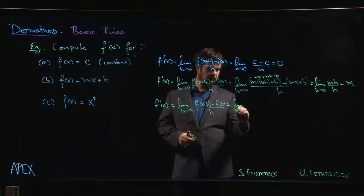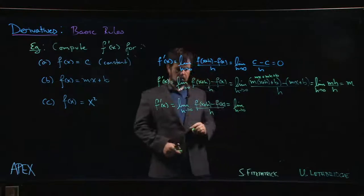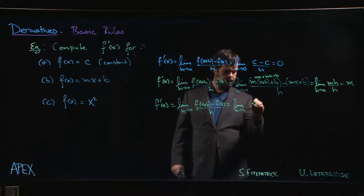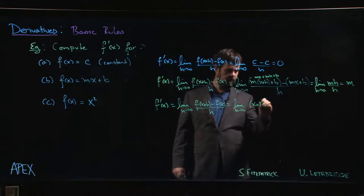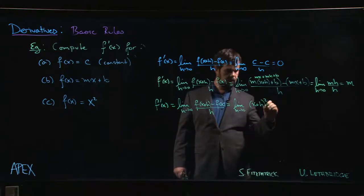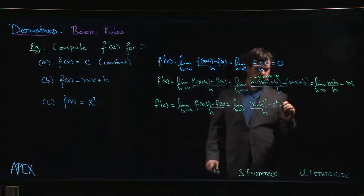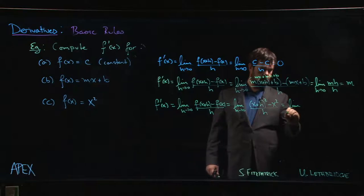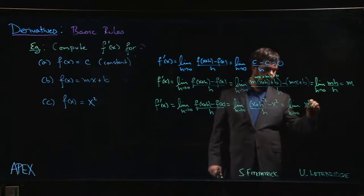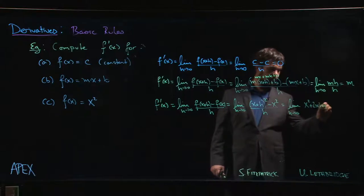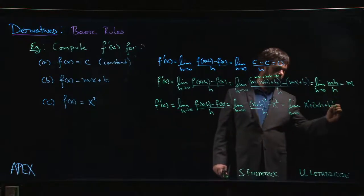This time we have [(x + h)² - x²]/h. So this is going to be the limit as h goes to 0 of (x² + 2xh + h² - x²)/h.